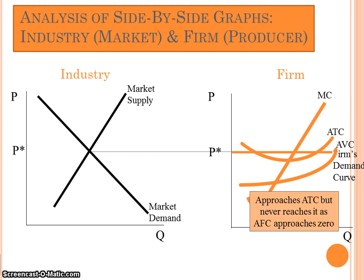Average variable cost is another curve we need to pay attention to. Average variable cost is also a U-shaped curve, and marginal cost will also intersect average variable cost at its lowest point.